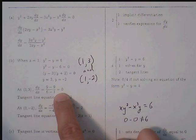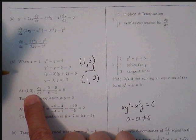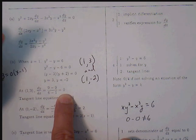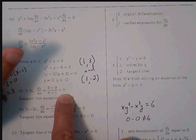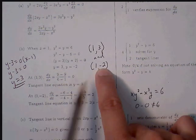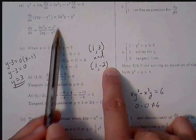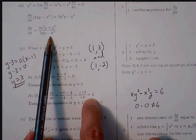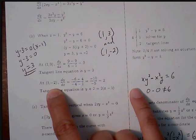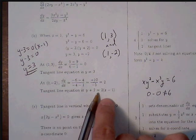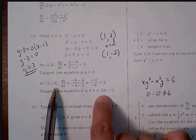With ordered pair (1, 3) and slope 0, point-slope form gives y minus 3 equals 0 times (x minus 1), so the tangent line is simply y equals 3. For the second ordered pair (1, −2), plugging into the derivative gives (−6 minus 4) over (−4 minus 1), which is −10 over −5, which equals 2. So slope is 2, and point-slope form gives y plus 2 equals 2(x minus 1).